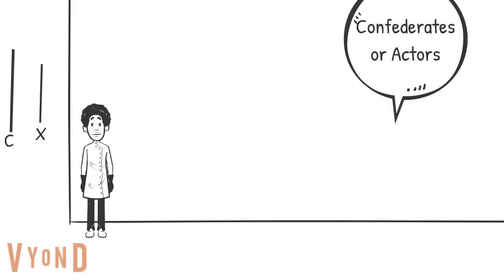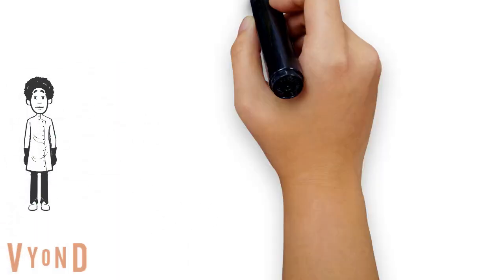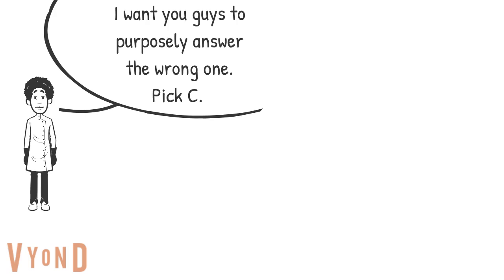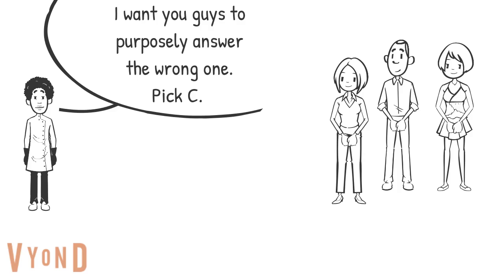The second leg of the experiment, Asch had actors or confederates sitting in a classroom with the actual study participant. However, the study participant had no idea that these were actual actors — he thought they were other participants in the study. They were all asked to judge the length of lines similar to the first leg of the study. The actors were told by the experimenter to purposefully pick the wrong answer.